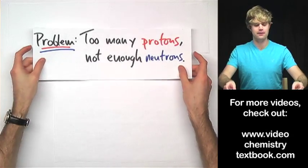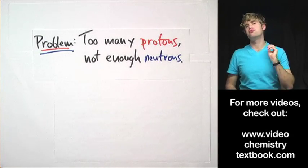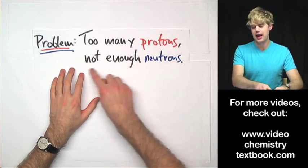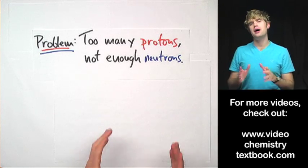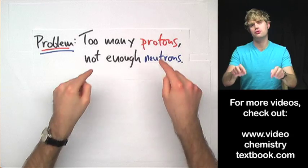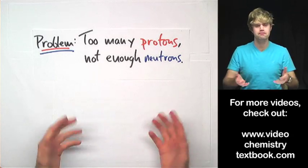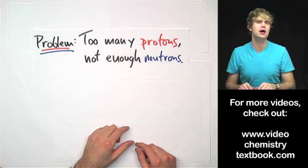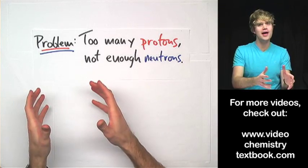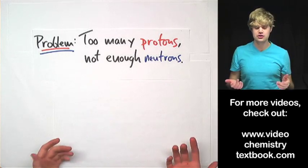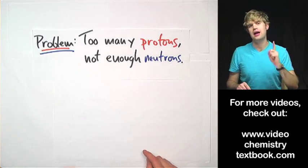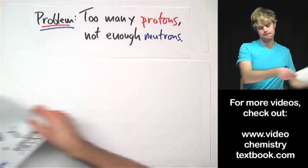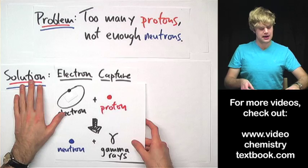Like the forms of decay we've already learned about, electron capture helps atoms deal with a problem. And the problem that electron capture helps with is when atoms have too many protons and not enough neutrons. If you've already learned positron decay, you might remember that this is also the problem that positron decay helps fix. It just so happens that there are two ways that atoms can fix this. Positron decay is one of them and electron capture is the other. This is the problem, and the solution, or one of the solutions, is electron capture.